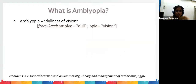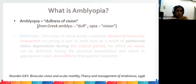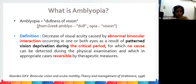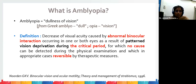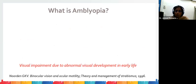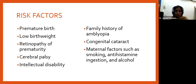Amblyopia is derived from two Greek words: 'amblyo' meaning dull and 'opia' meaning vision — so amblyopia means dullness of vision. The famous definition by Professor Von Noorden describes it as a decrease of visual acuity caused by abnormal binocular interaction that can occur in one or both eyes. Key components: deprivation must happen within the critical period, no specific cause should be detected on examination, and when detected early it should be reversible by appropriate therapeutic measures.